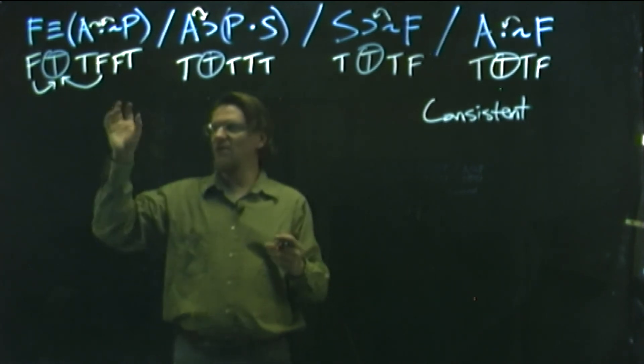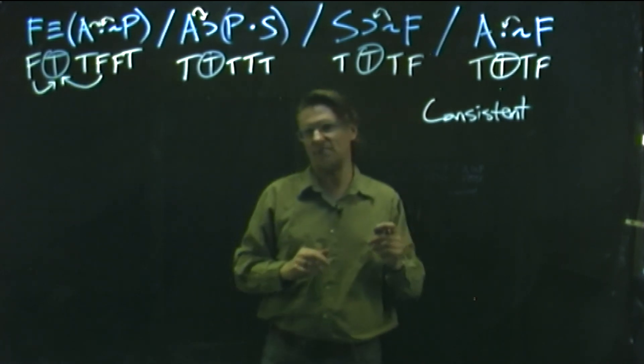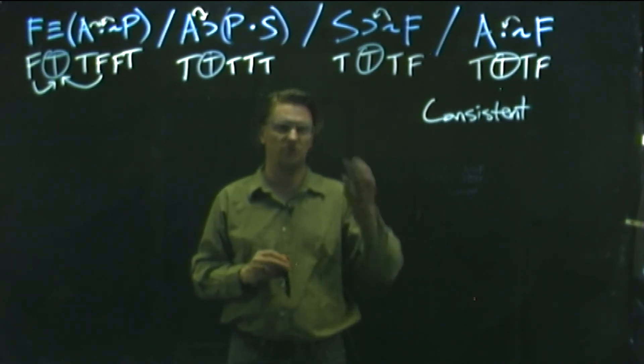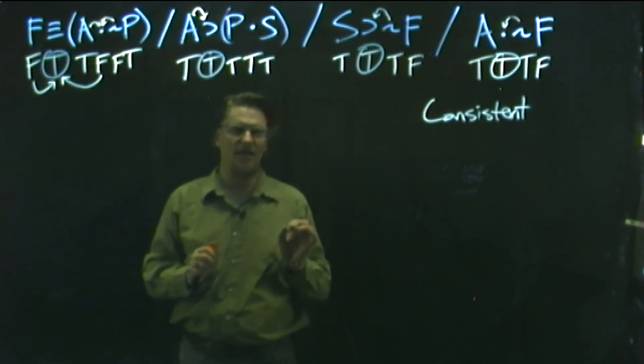So that's how we're going to approach indirect truth tables for consistency. It's similar to testing for validity, but we have to make the adjustment to make all the claims true at the same time and see if we can make that happen. So we'll try this a few other times here in the subsequent videos to make sure you're totally getting the hang of this.